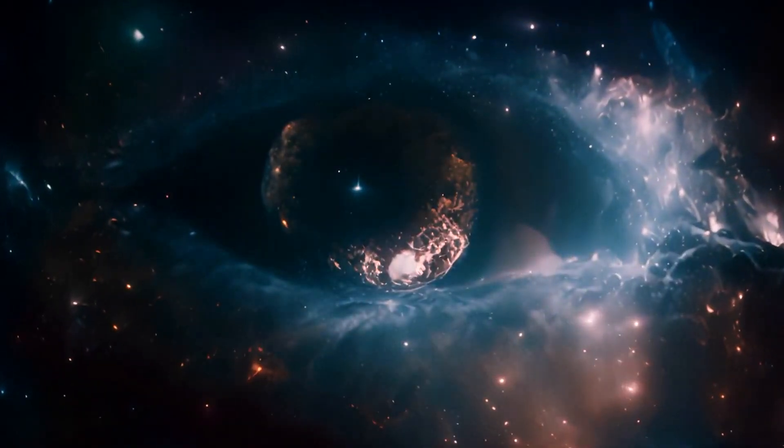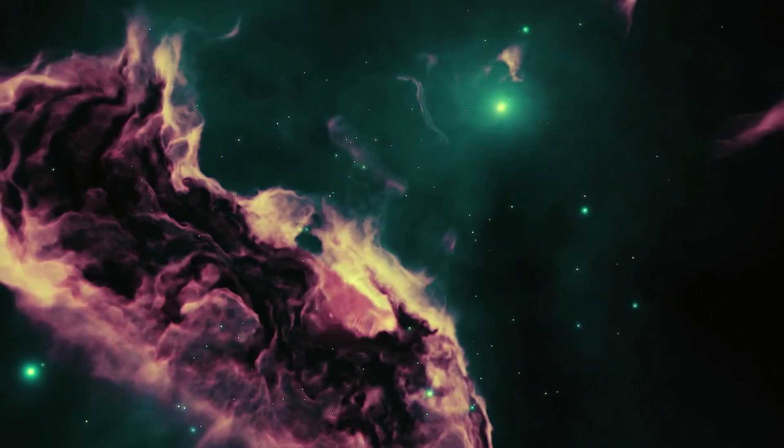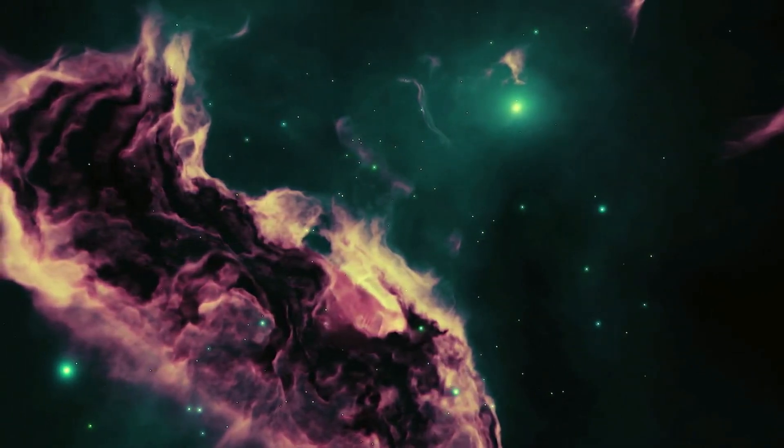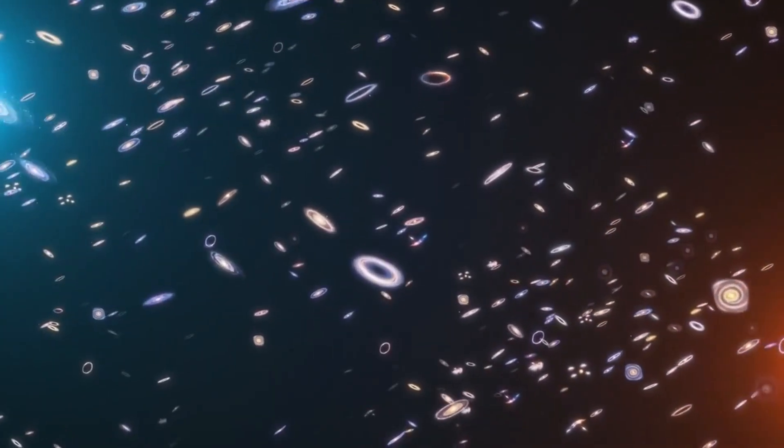This fact has some pretty profound consequences for how we see everything. It means there's a boundary around us called the Hubble sphere. Beyond this edge, galaxies are already receding from us faster than light.